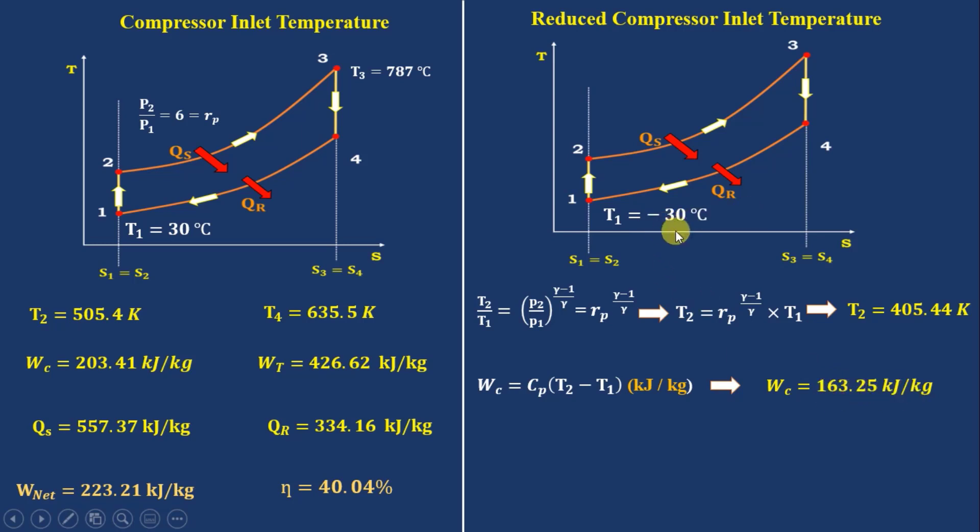When ambient temperature is 30 degrees Celsius, look at Wc: 203.41 kJ per kg. From this we can conclude that when ambient temperature is low, work given to the compressor will be lower.